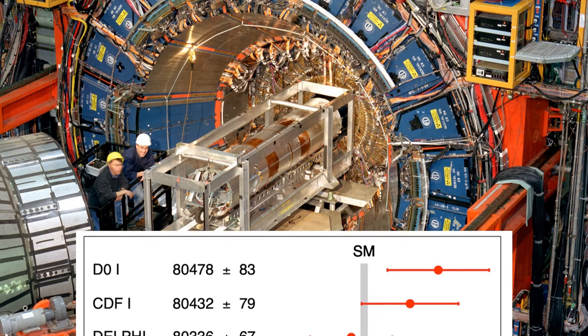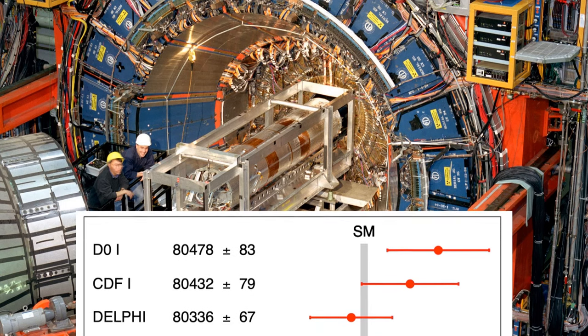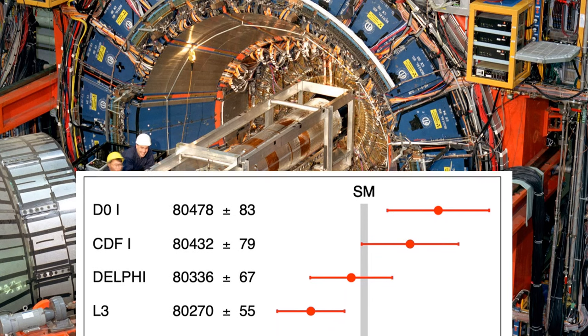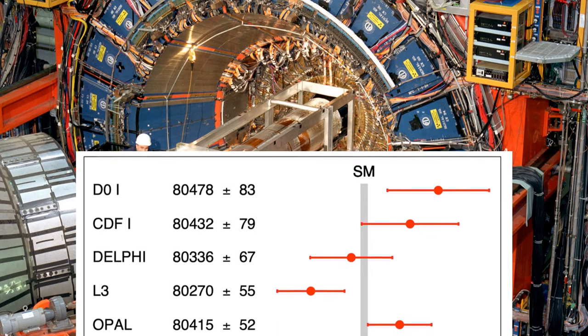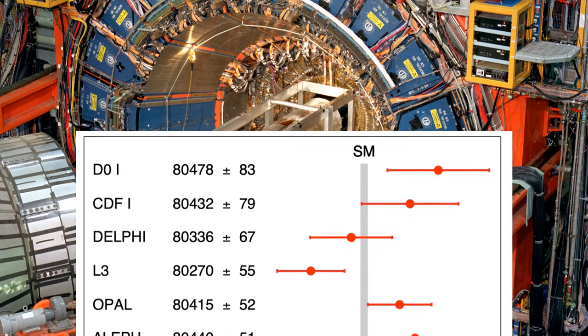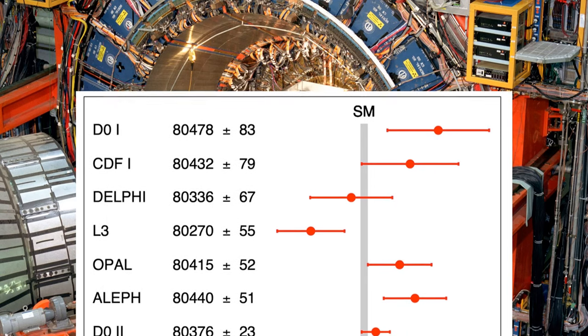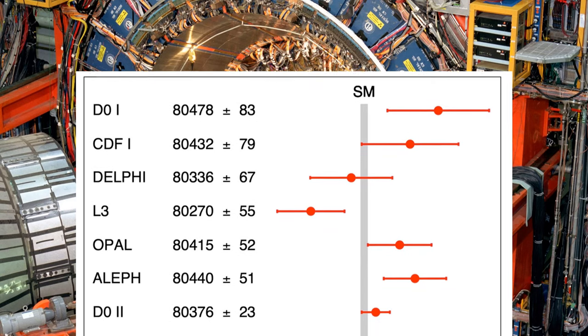Scientists of the collider detector at Fermilab collaboration have achieved the world's most precise measurement. The CDF value has a precision of 0.01% and is in agreement with many W boson mass measurements. It shows tension with the value expected based on the standard model of particle physics.